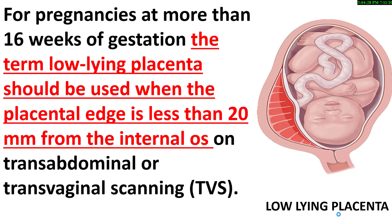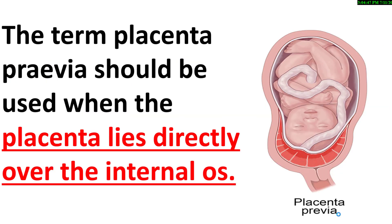Meaning, if the placental edge is more than 2 cm away from the internal cervical os, we should not use the terminology of low-lying placenta. Similarly, for pregnancies at more than 16 weeks gestation, the term placenta previa should be used when the placenta lies directly over the internal os. It is very important to know these definitions to make the proper diagnosis.